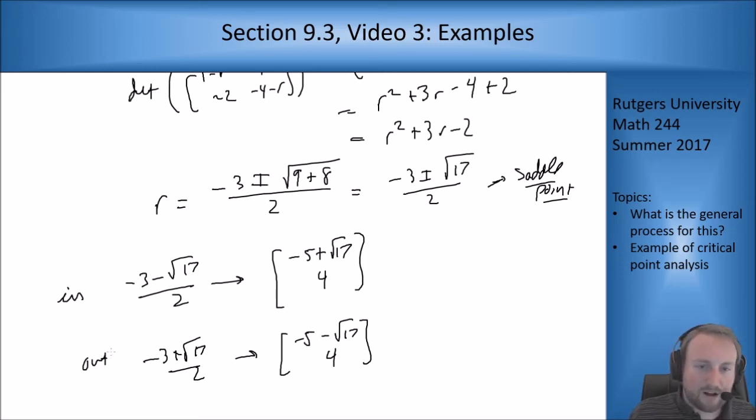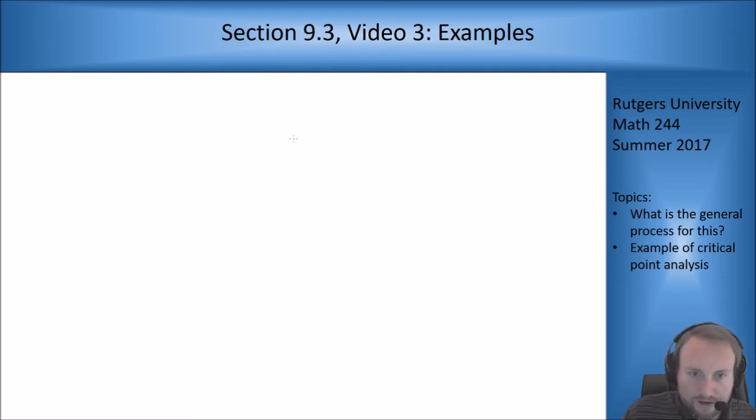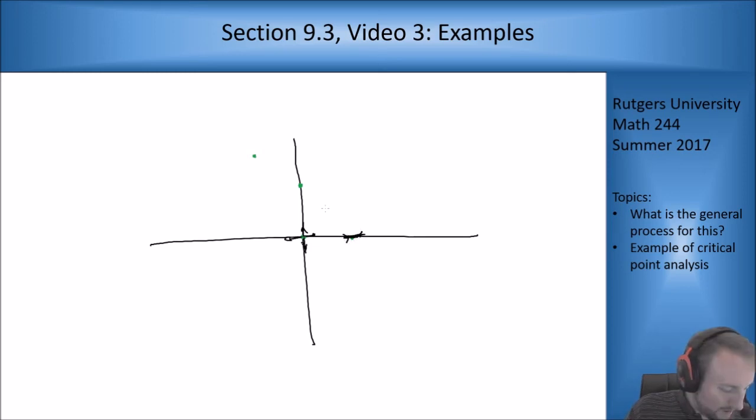Now let's attempt to draw what all this looks like. We had critical points at (0,0), (0, 3/2), (1,0), and (-1, 2). At the origin, we have an unstable node with directions in the coordinate directions. At (0, 3/2), a saddle point with axes coming in and angles going out.